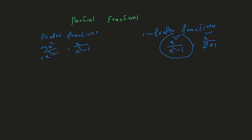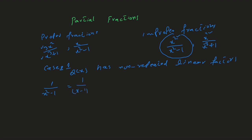We need to keep in mind the different types of fractions and the cases of partial fractions. Today we're going to talk about the first case. The first case is when q(x) has non-repeated linear factors. For example, 1 over x² minus 1 can be written as 1 over (x − 1)(x + 1).